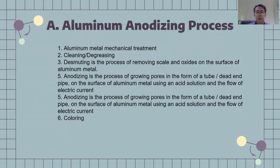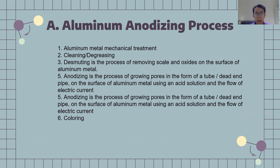This is the procedure for the anodizing process. First, aluminum mechanical treatment. Second, cleaning and degreasing — pour water in it and scrub it for the cleaning process. Third, desmutting is the process of removing scale and oxides on the surface of aluminum metal. Fourth, anodizing is the process of growing pores in the form of a tube or dead-end pipe on the surface of aluminum metal using an acid solution and the flow of electric current.